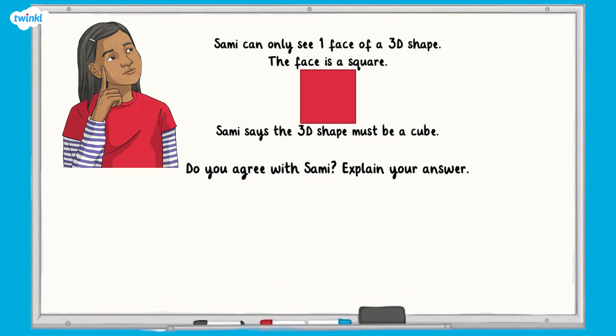Now it's time for you to use your knowledge to answer a challenge question. Sammy can only see one face of a 3D shape. The face is a square. Sammy says the 3D shape must be a cube. Do you agree with Sammy? Remember to explain your answer by giving examples. Pause now while you answer the question.